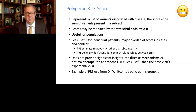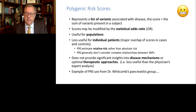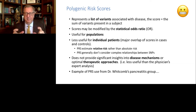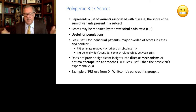Polygenic risk scores also have inherent problems. It is a list of variants associated with the disease, but the score is based on the sum of the variants and doesn't provide much insight. These are adjusted by statistical odds ratios or log odds ratios to weight them slightly. They have been shown to be quite useful for populations, but less useful for individuals — and for precision medicine, it's the individual we're trying to understand. There's a large overlap of cases and controls based on a polygenic risk score, and these scores look at relative risk rather than absolute risk. They don't capture the complex relationships between SNPs and don't guide you toward the appropriate therapy.